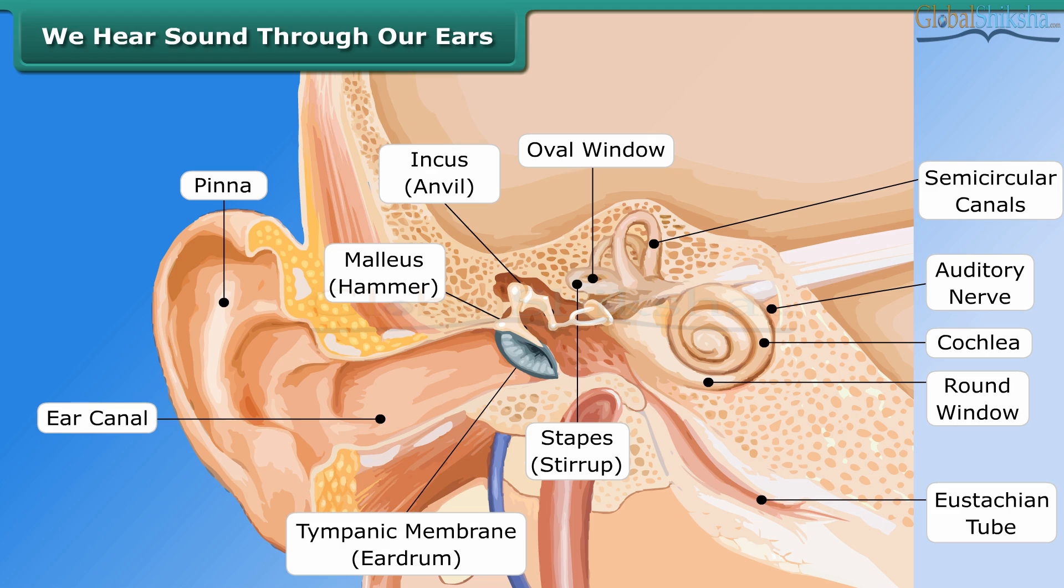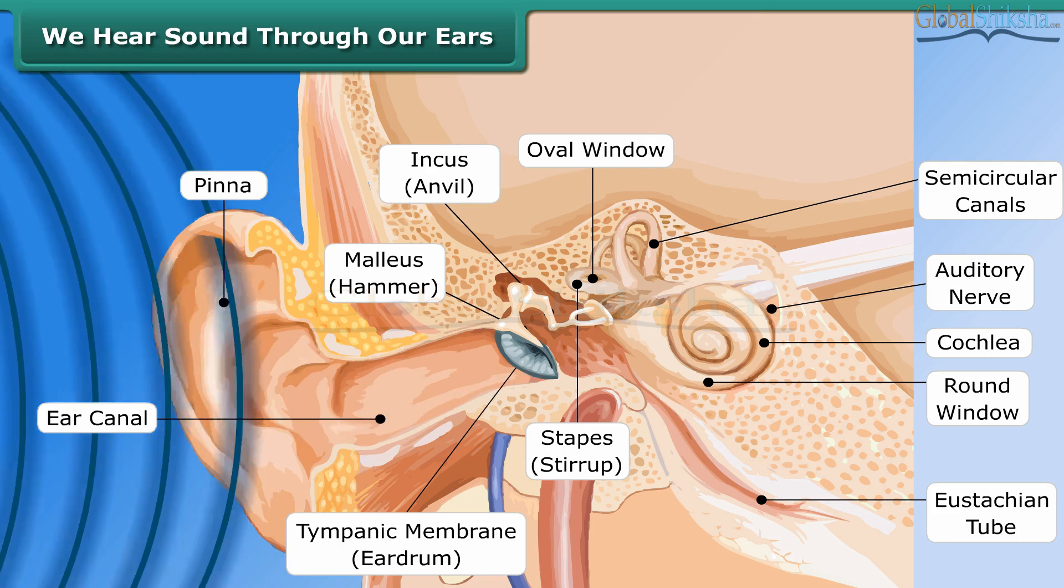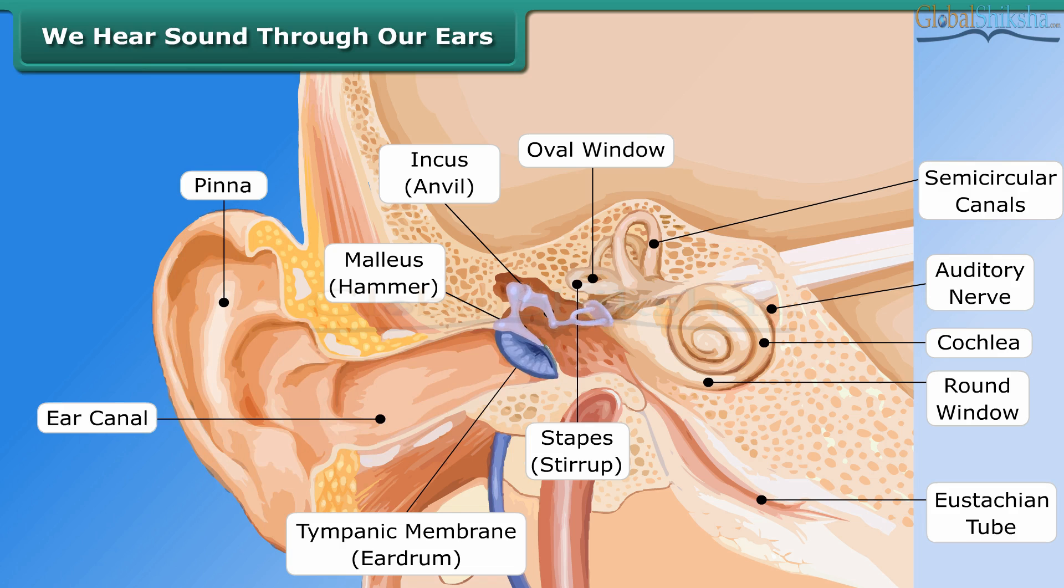We hear sound through our ears. The shape of the outer part of the ear is like a funnel. Sound enters and travels down a canal at the end of which a thin membrane is stretched tightly called eardrum. Sound vibrations make the eardrum vibrate and the eardrum sends vibrations to the inner ear and through inner ear it goes to the brain. This is how we hear sound.